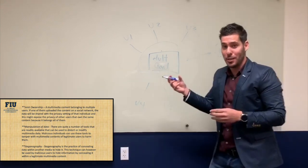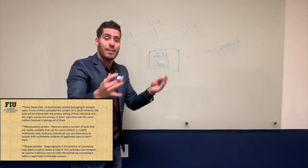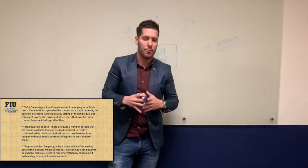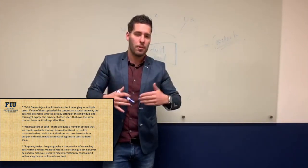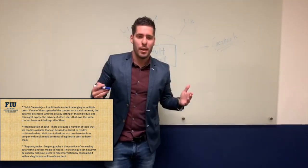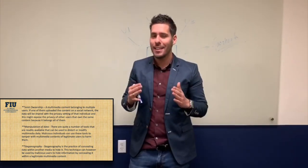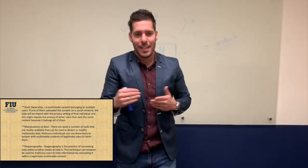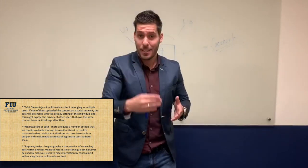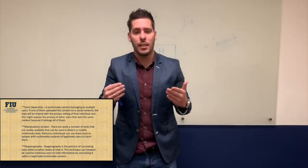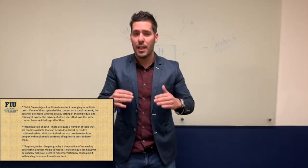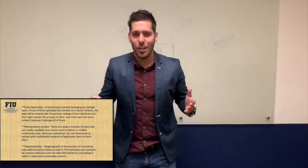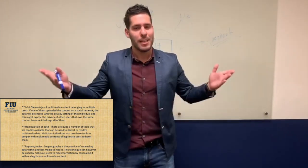It's like when you take a bad potato and put it in a box — this potato is affecting the whole box. It's the same example. Now, I'm going to talk about manipulation of data. There are quite a number of tools available that can be used to distort or modify multimedia data. Malicious individuals can use these tools to tamper with the multimedia content of legitimate users. Finally, steganography is the practice of concealing data within another media to hide it. This technique can be used by malicious users — black hat hackers — to hide information by concealing it within legitimate multimedia content. We have to be really aware about this, because it affects our integrity in a social network when we are online.